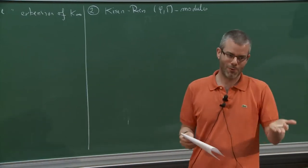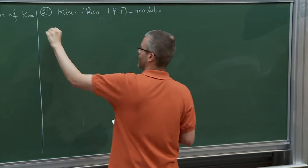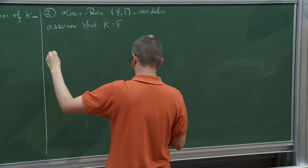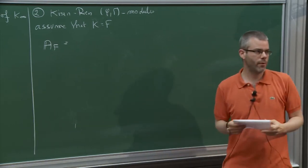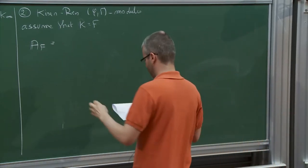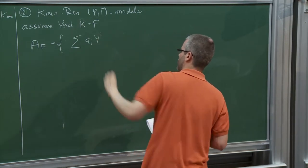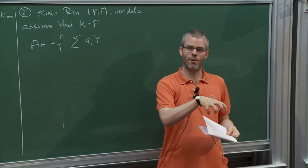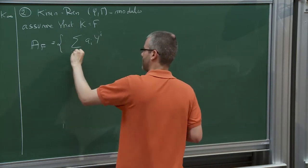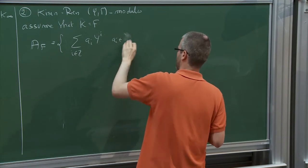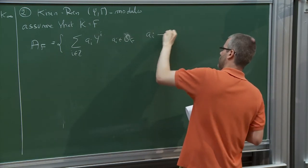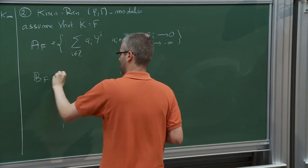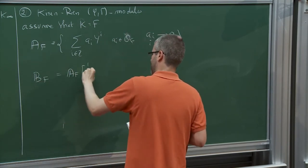So: Kisin-Ren phi-gamma modules. From now on I assume K = F because this makes my life simpler. Let me start by recalling the definition of the rings of power series over which Fontaine's phi-gamma modules are defined. A_F is the set of power series in the variable Y — I use Y to differentiate from X, the cyclotomic variable, since Y is the Lubin-Tate variable — with coefficients a_i in O_F, and a_i → 0 as i → −∞. And B_F = A_F[1/p].